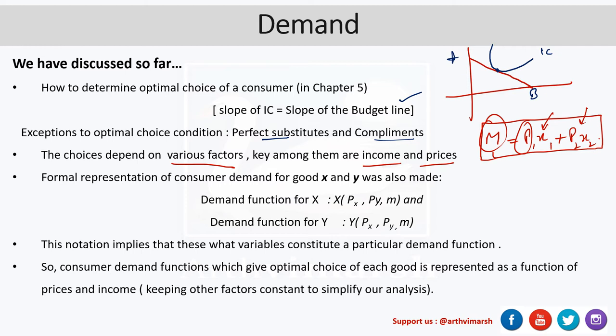So how to formally represent such demand? This function was discussed in the previous chapter as well. Formally, the consumer demand for good x and y—if x and y are the two commodities—their demand function can be given as follows. For the demand of x, it can be written as a function of price of x, then the price of the other commodity, and the income of an individual. And likewise for commodity y, it can be written as a function of its own price, the price of the other commodity, and the income.